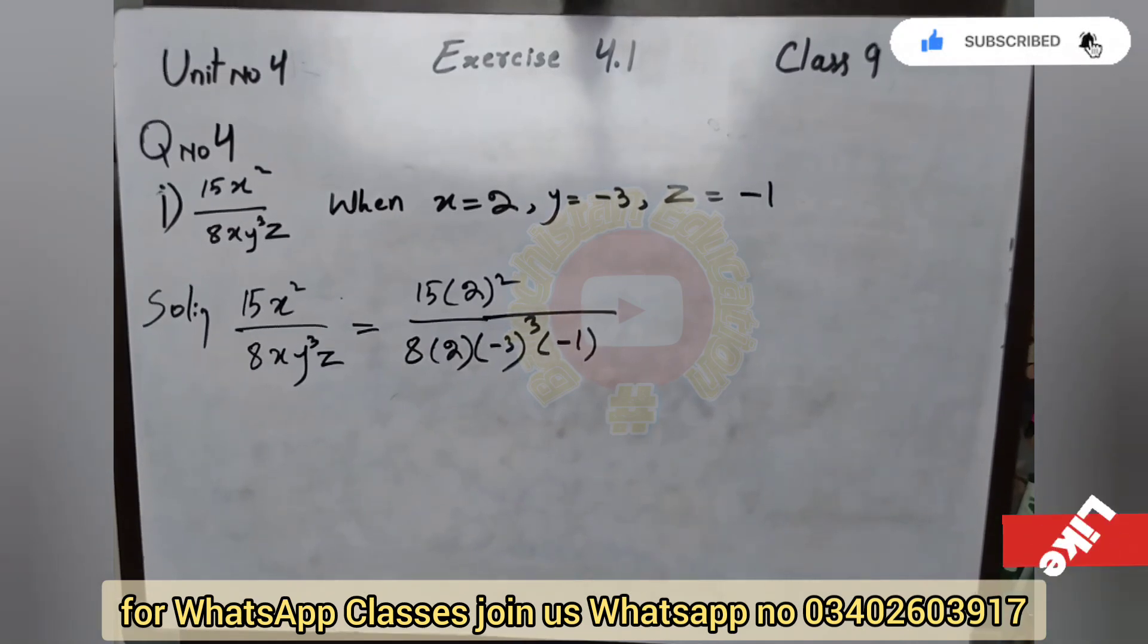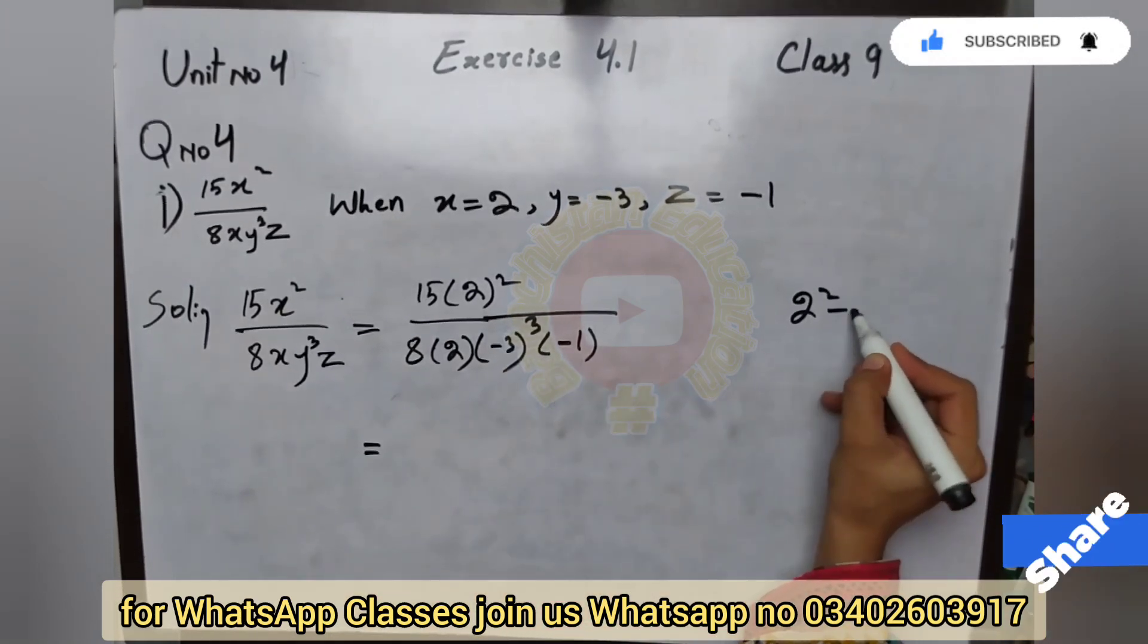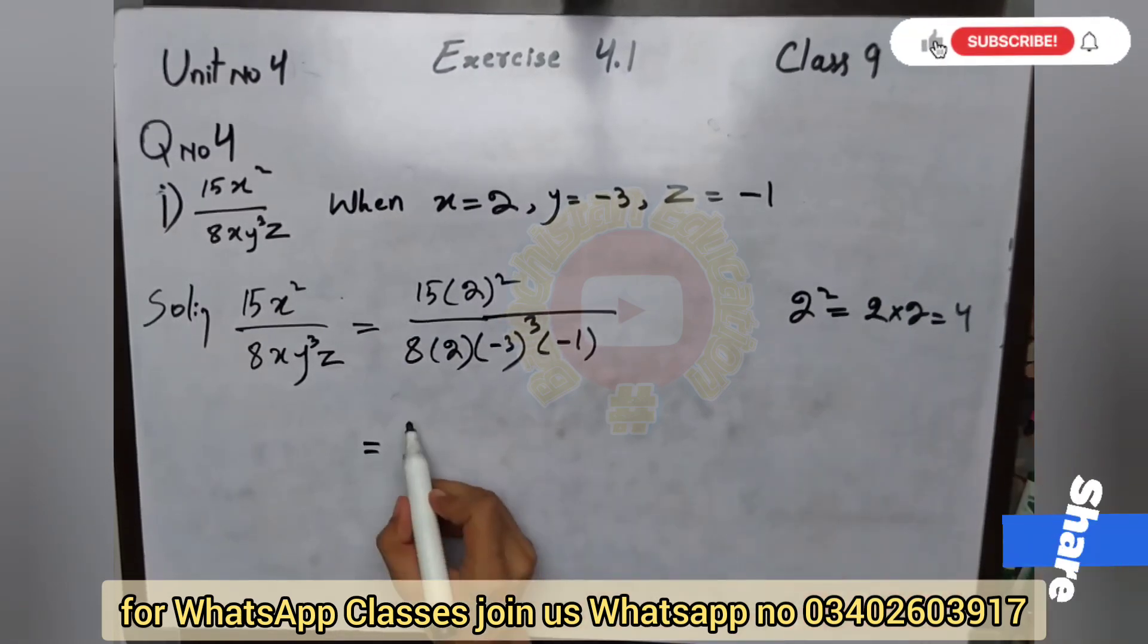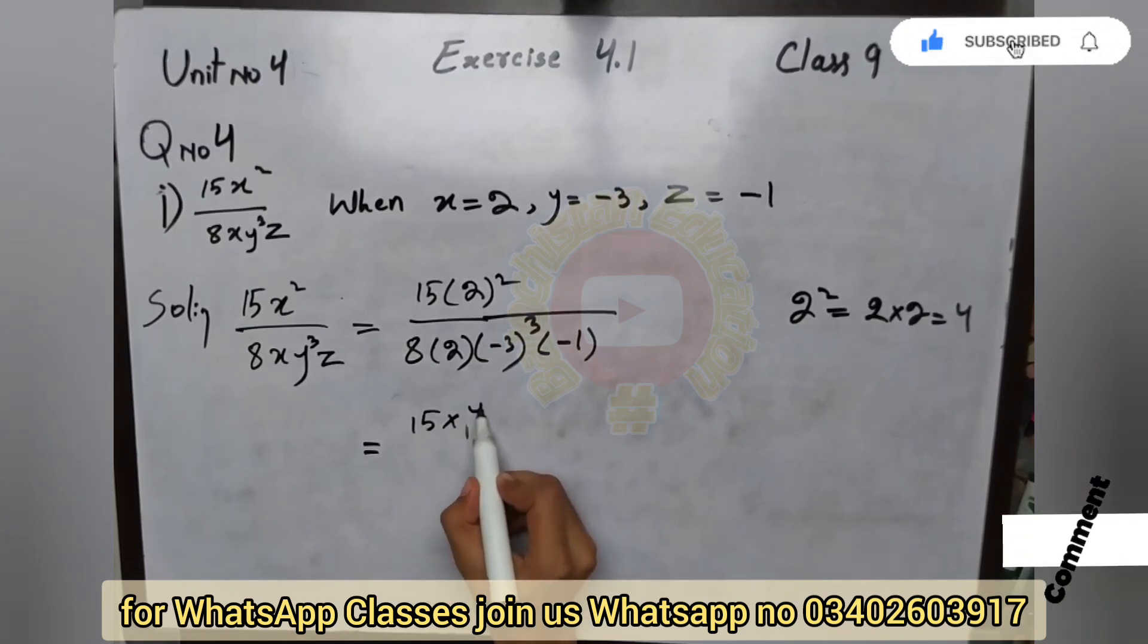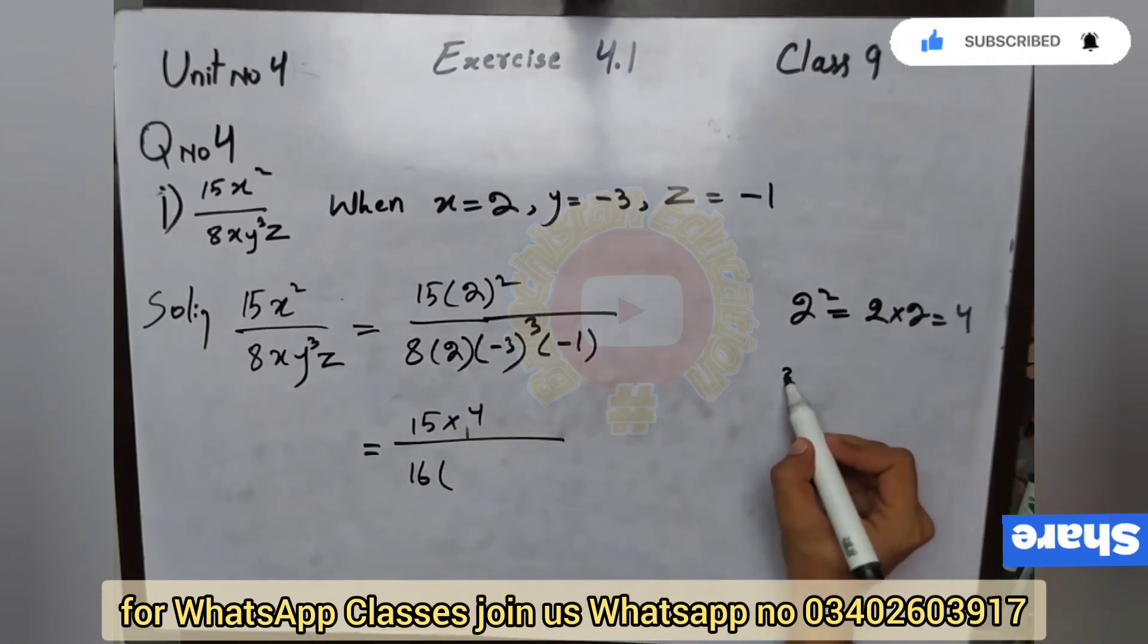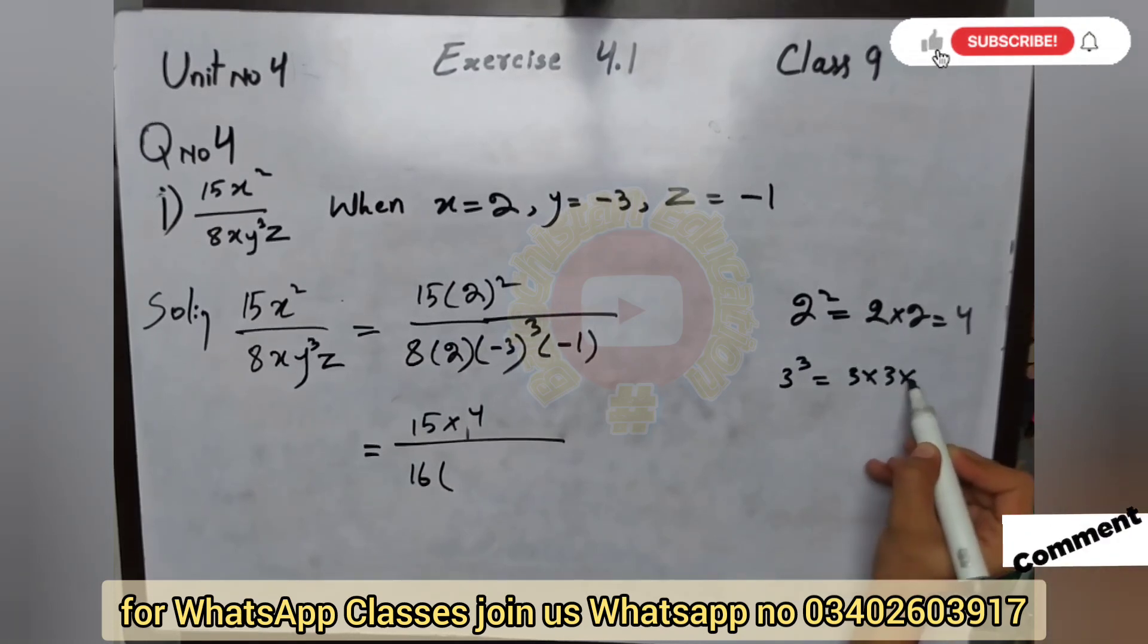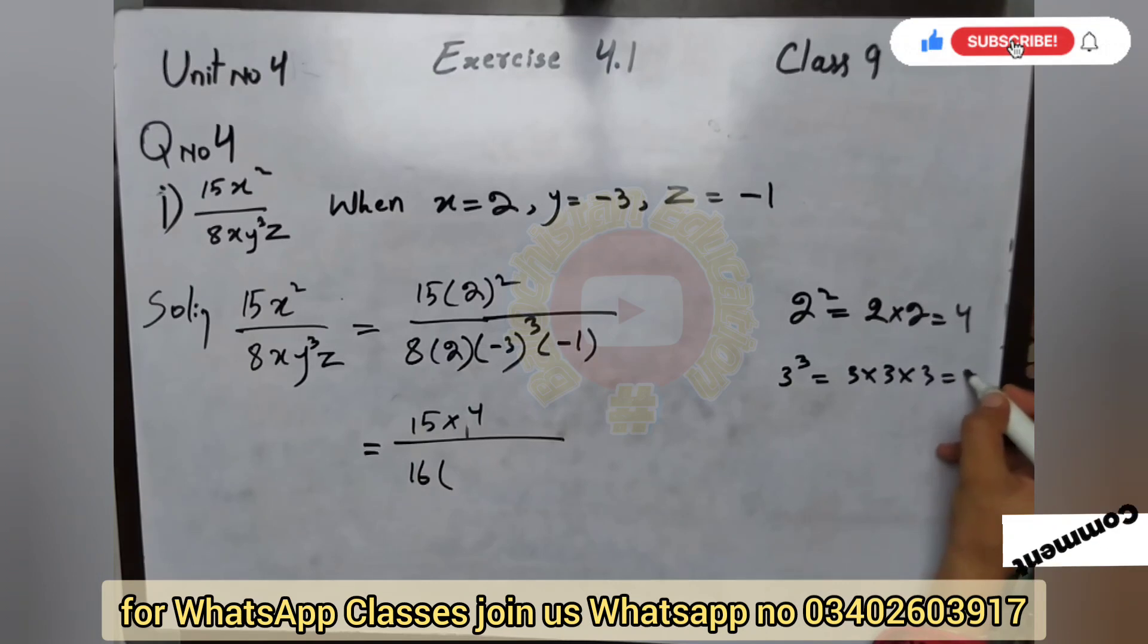Next step, we know 2 square is equal to 2 multiplied by 2 which is equal to 4. So 15 multiplied by 4 upon 8 multiplied by 2 is 16. 3 cube, if we have, is 3 multiplied by 3 multiplied by 3. 3 times 3 is 9, 9 times 3 is 27.